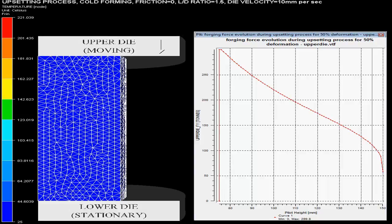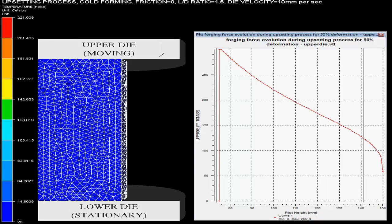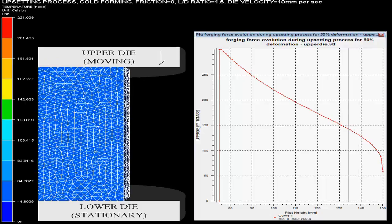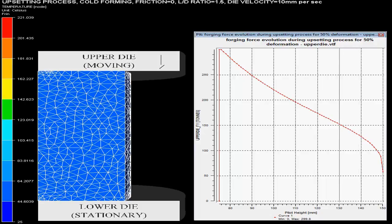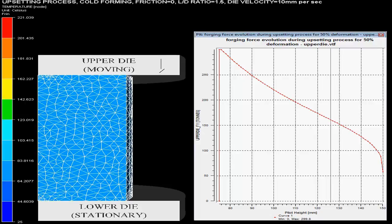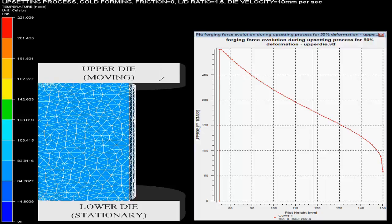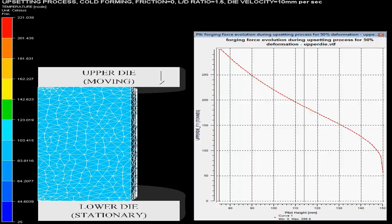This metal forming simulation depicts the upsetting process. Upsetting is a process in which metal is plastically deformed, and it is an open die forging process. This process is extensively used for shaping oversize billets by compressing them.